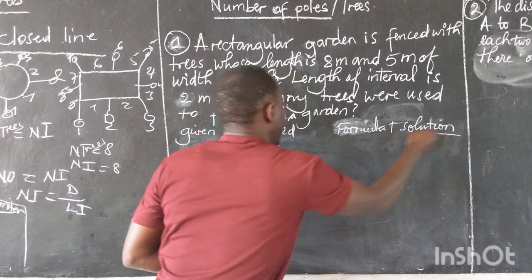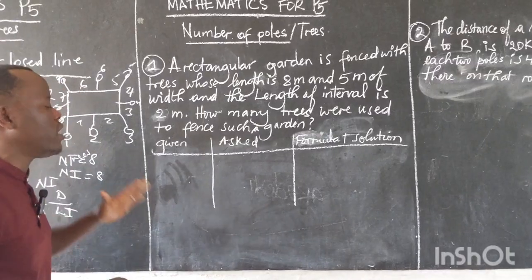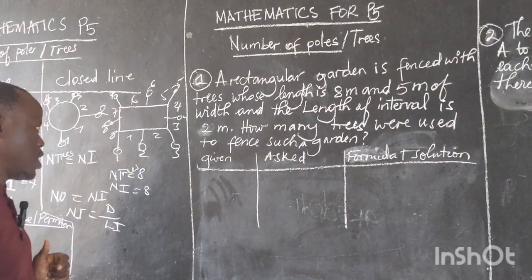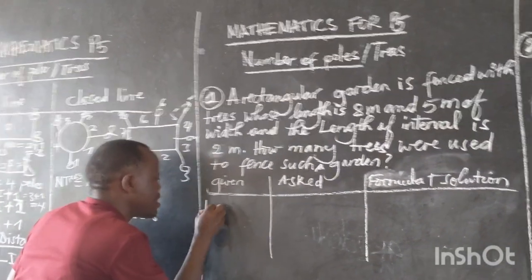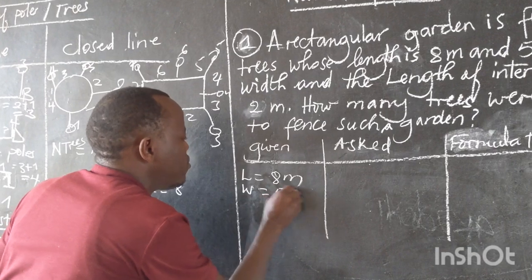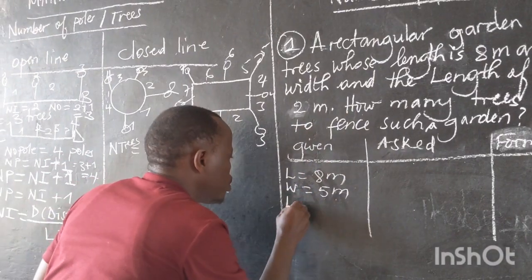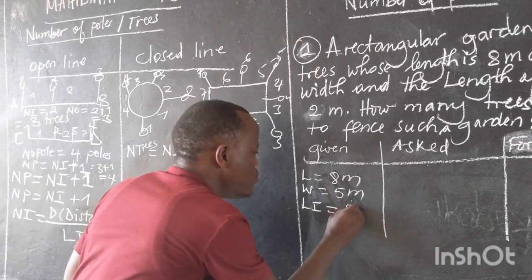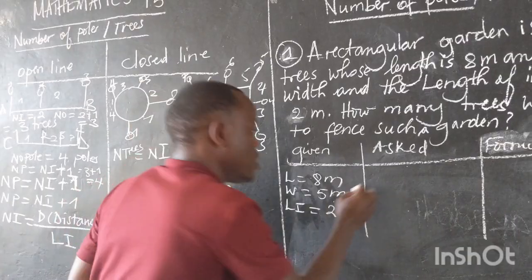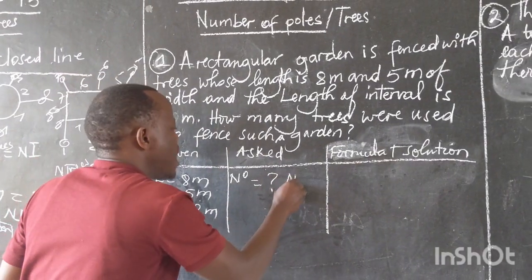This is what is asked, and this is the solution and formula. The reason we draw this small table is to help us do this question well without making a mistake. What is given: length equals eight meters, width equals five meters, and length of interval equals two meters. The question asks us to find the number of trees.